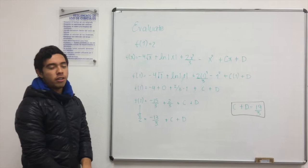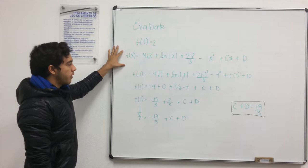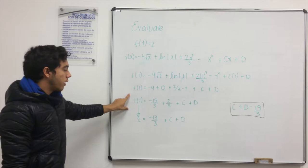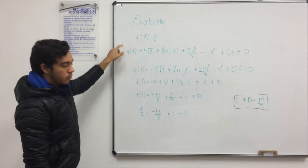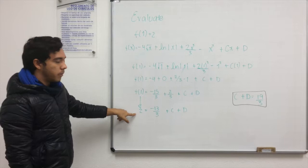So the problem says that f of 1 equals 2, and so we need to substitute 1 in x. And we have to do it in the function of x, so we substitute 1, and this will be our answer. And we know also that 2 equals f of 1 as the problem says, so we substitute it, and so we can isolate it. So we have that 2 equals minus 13 thirds plus c plus d.